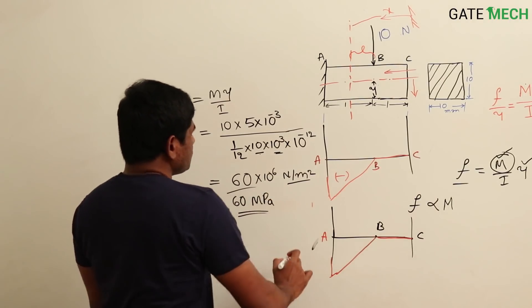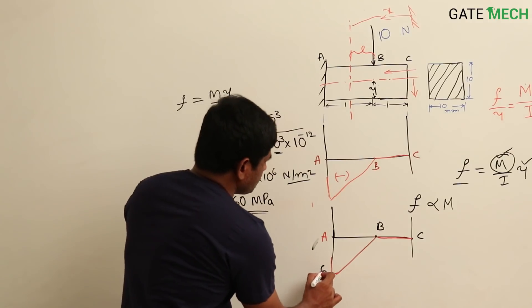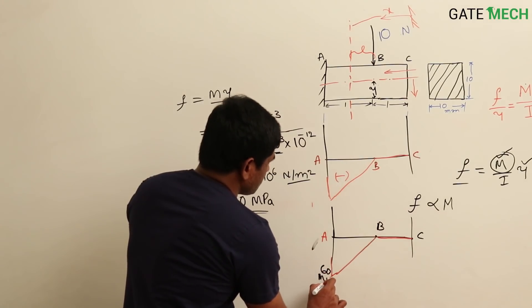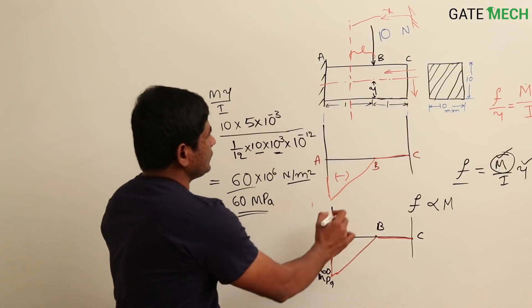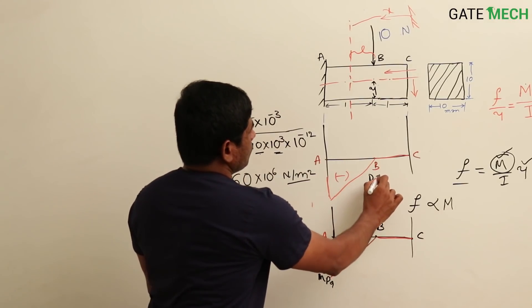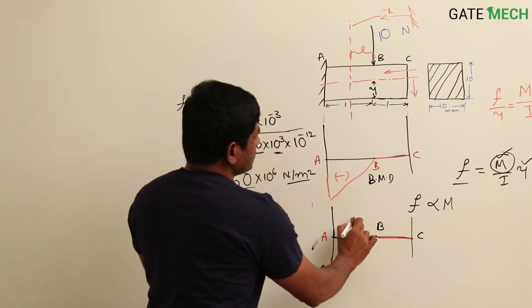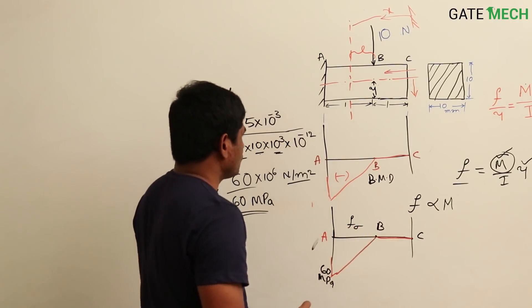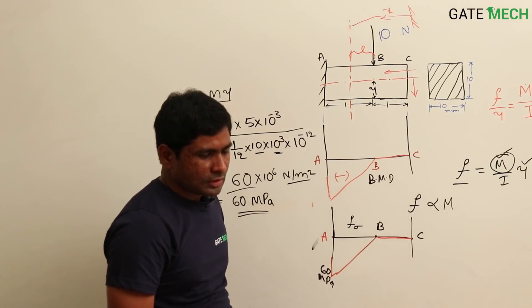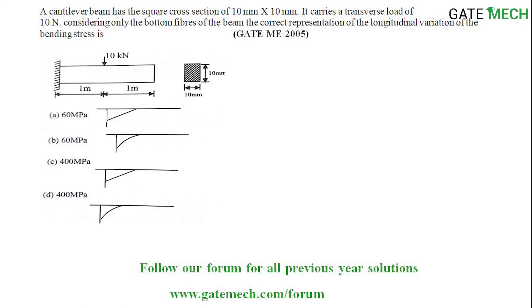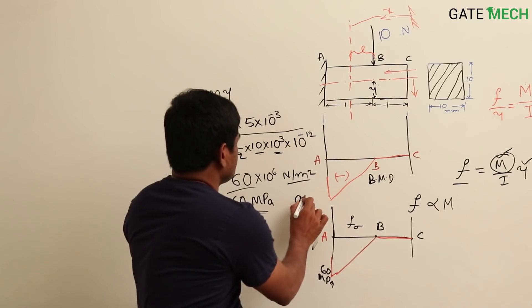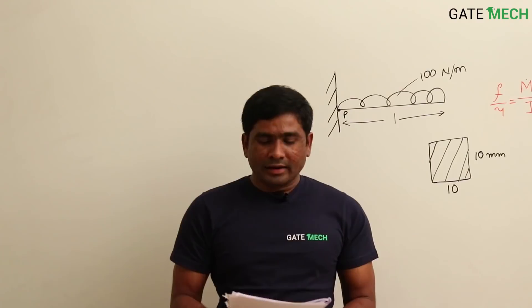The answer should match 60 megapascal with the linear shape described. Option A is matching here.